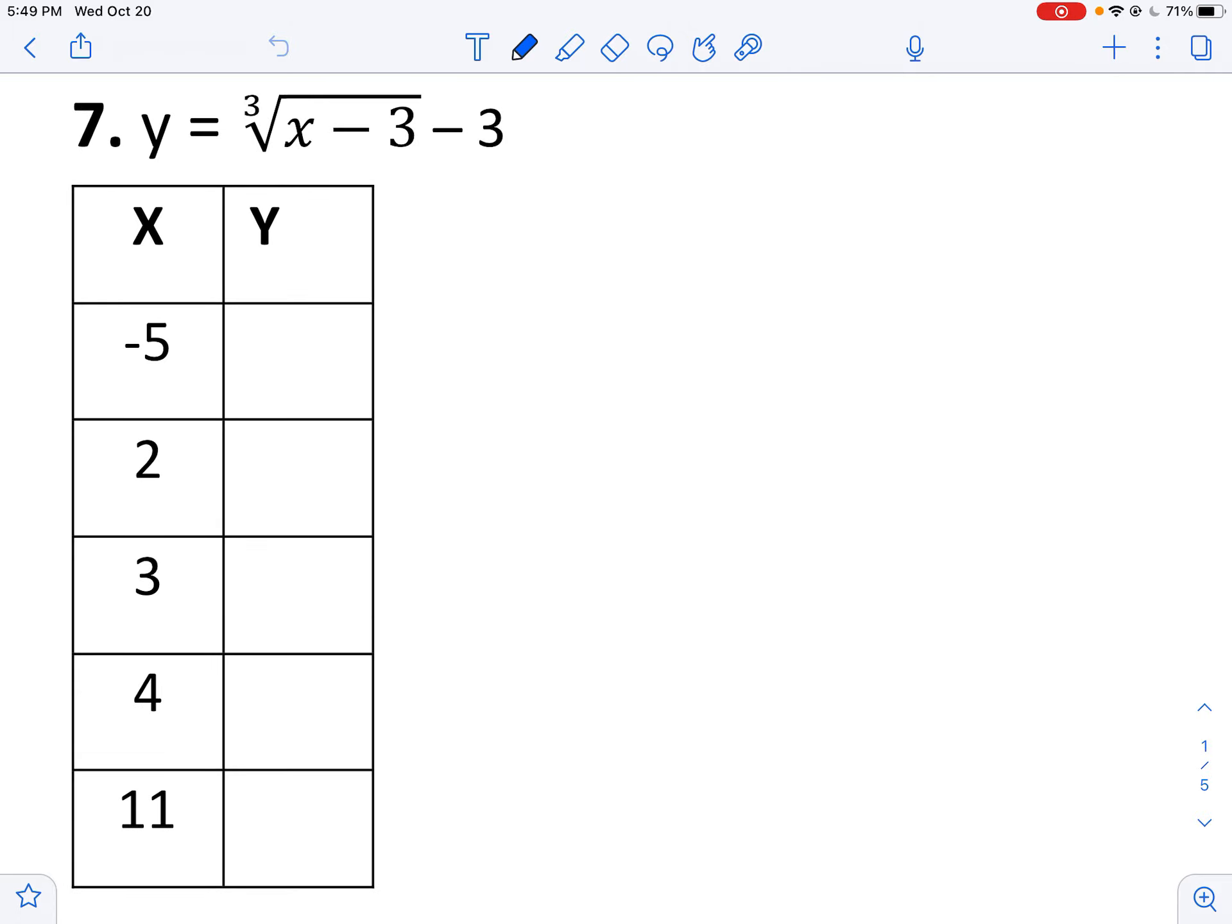So when we graph radicals there are a few things we need to know. We should know how a, h, and k affect the graph. And we should understand where our vertex is. So here the vertex would be at 3, so let me label that as vertex. My vertex would be at 3, negative 3. So notice how in the middle here I've got my vertex 3, negative 3.